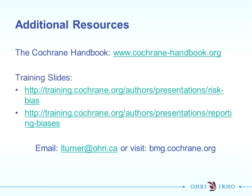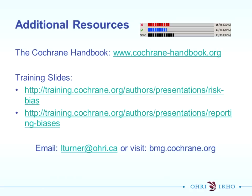Just in terms of the Cochrane handbook, it's readily available online. There are some changes that will be coming through in the next little while. It's a good idea to always check out the handbook prior to conducting your risk of bias assessments, as there will be some minor modifications now and some larger scale modifications coming through in the next couple of years.